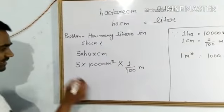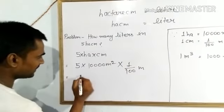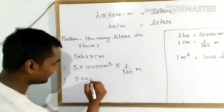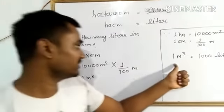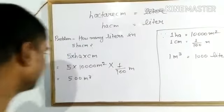Now, when we calculate it, it will be 500 meter cube. As we know, 1 cubic meter is equal to 1,000 liters.